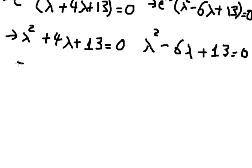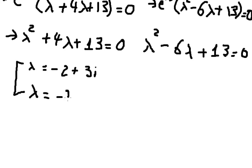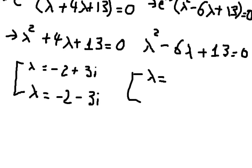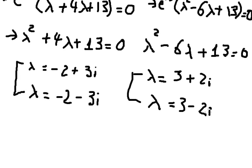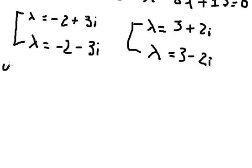So the solution of this one: we have lambda equals to negative 2 plus 3i, and lambda equals to negative 2 minus 3i — this is the imaginary unit. For the second one, we have lambda equals to 3 plus 2i, and lambda equals to 3 minus 2i.